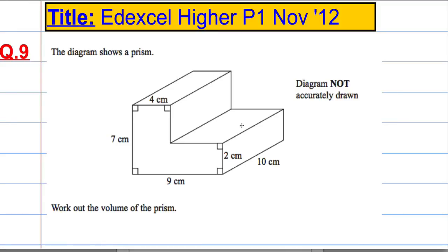Okay, question 9. The diagram shows a prism, and it's not drawn accurately. We're asked to work out the volume of the prism.